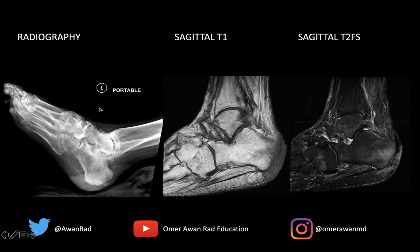If we take a look at the radiograph, what we see here is a soft tissue ulcer right here posterior to the heel — this area of skin defect. We have this mild resorptive change of the calcaneal tuberosity, and we have focal osteopenia. That's why this bone looks a little darker than the rest of the calcaneus, all suggestive of possibly acute osteomyelitis.